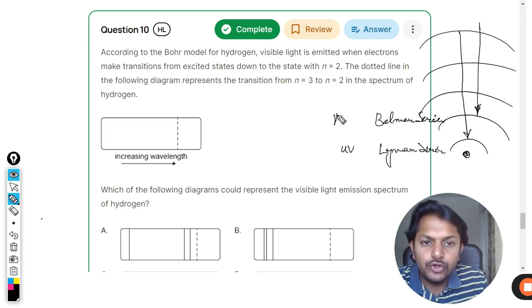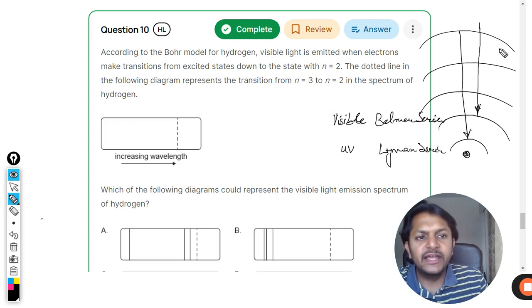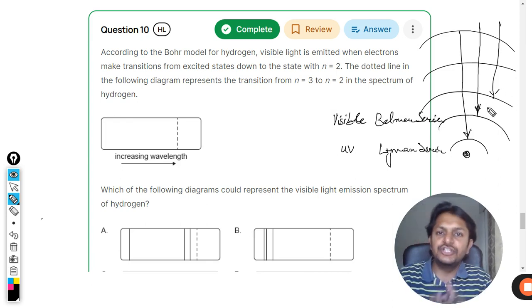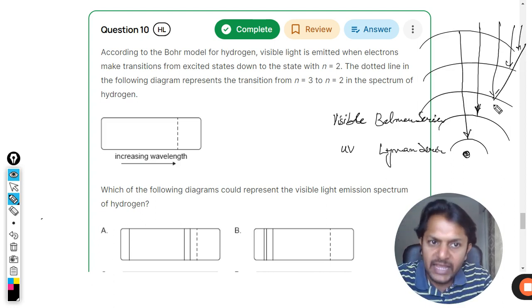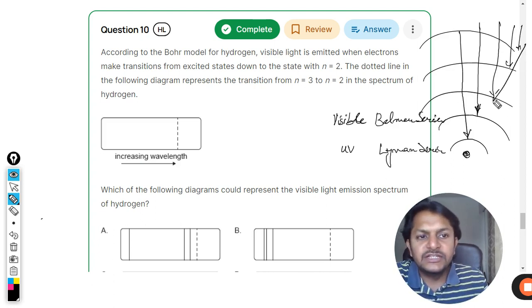The Balmer series produces visible light. Beyond it, if any electron jumps into shell number three, four, or five, they have different names: Lyman, Balmer, Paschen, Brackett, Pfund.